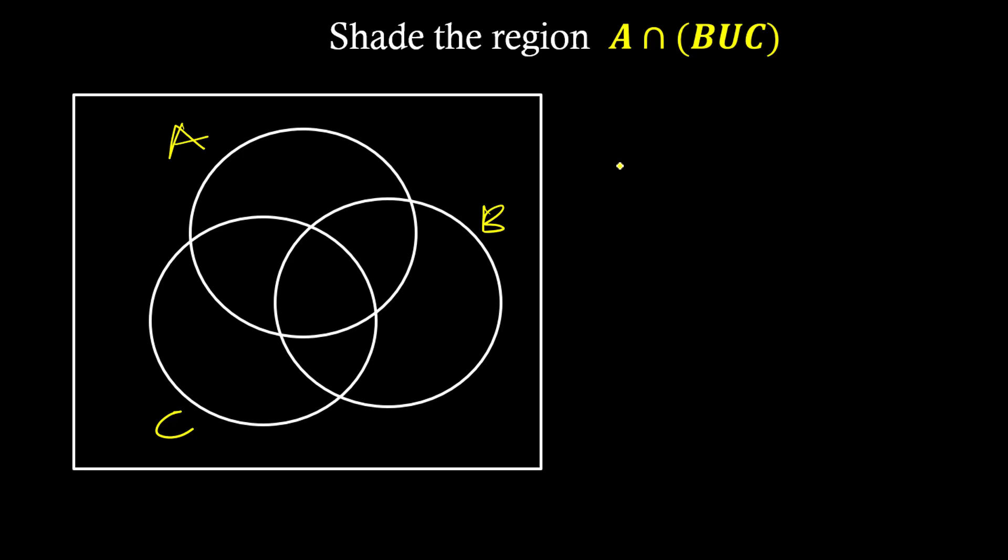Welcome back to TDS Online Math. Let's consider this question. We have to shade this region A intersection B union C. This is what we are going to do.